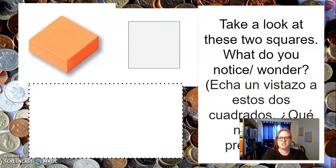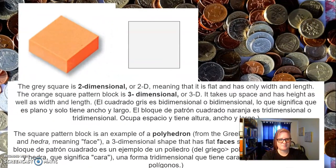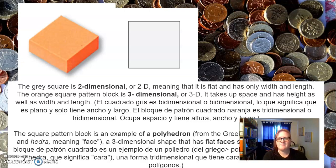Now take a look at these two squares. What do you notice? What do you wonder? Go ahead, pause here, and do the last four slides including this one. The gray square is two-dimensional, or 2D, meaning that it is flat and has only a width and a length. The orange square pattern block is three-dimensional, or 3D. It takes up space and has height as well as width and depth. The square pattern block is an example of a polyhedron.